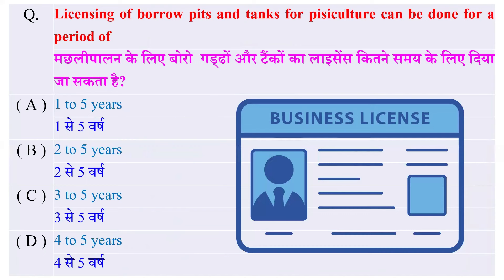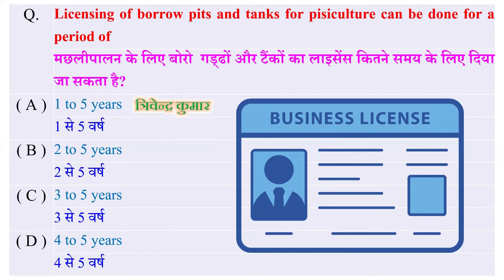Licensing of burrow pits and tanks — बॉरो गड्ढों और टैंकों का लाइसेंस कितने समय के लिए दिया जा सकता है? Options: एक से पाँच वर्ष, दो से पाँच वर्ष, तीन से पाँच वर्ष, या चार से पाँच वर्ष — और सही जवाब है एक से पाँच वर्ष।